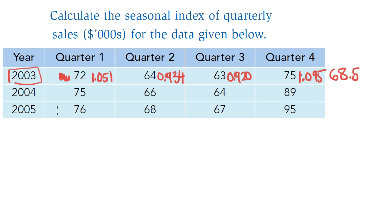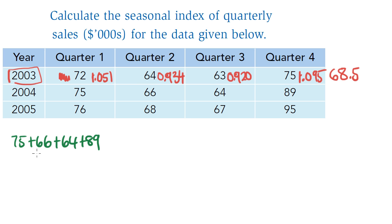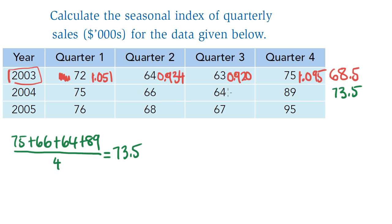I'll do the same step for 2004 and work out the yearly proportions. The first step is to find a yearly average: 75 plus 66 plus 64 plus 89 divided by 4, and I get 73.5. So that's the yearly average for 2004.